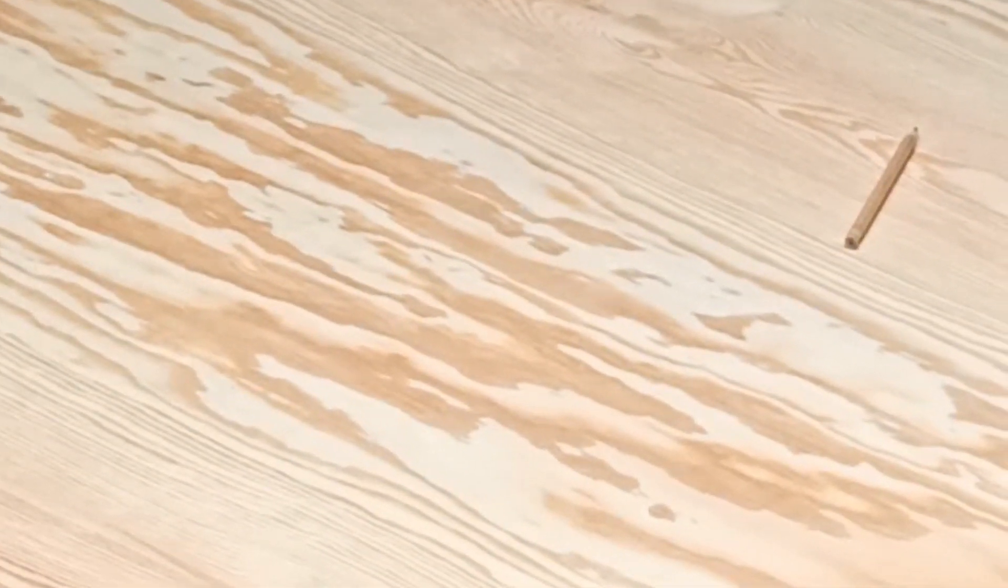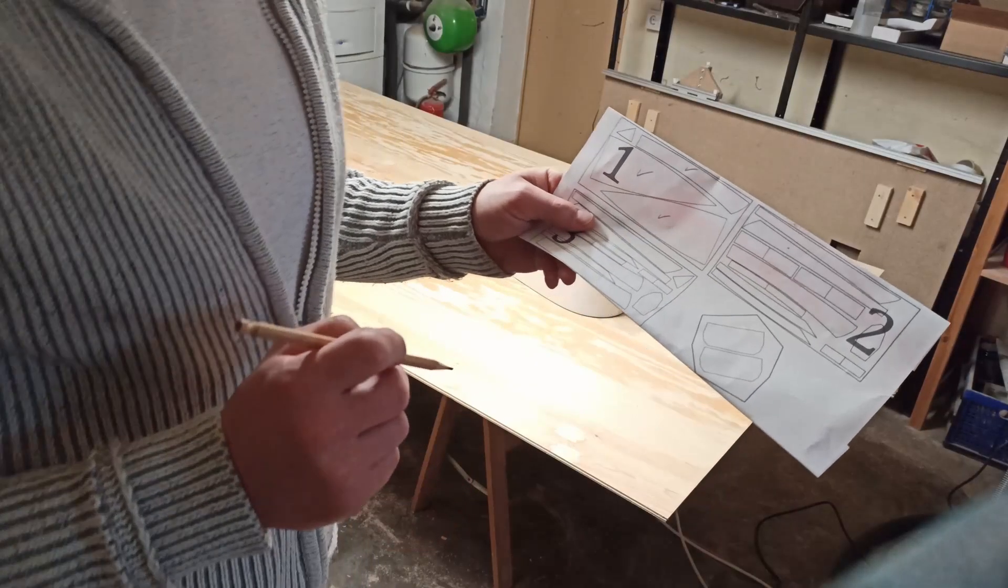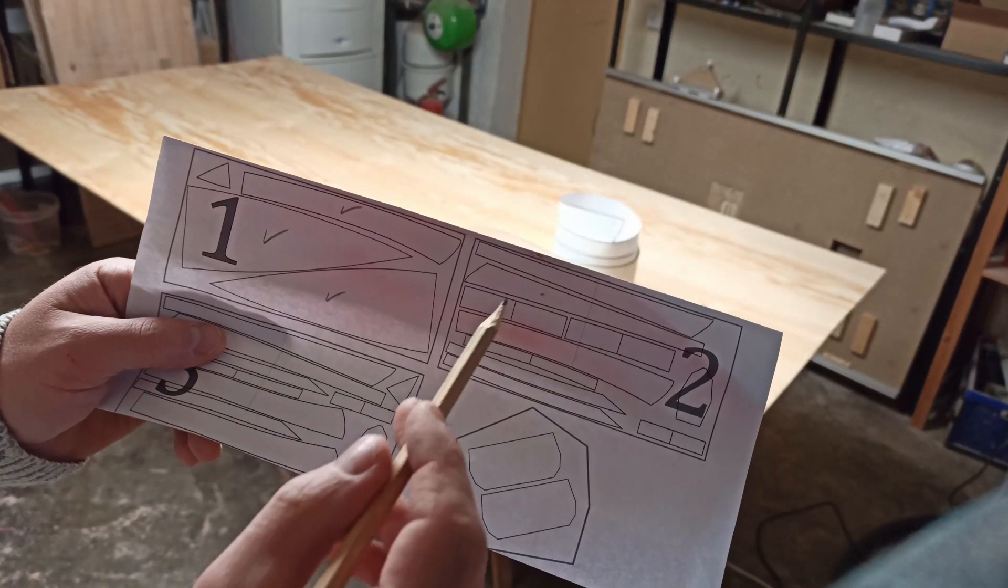This plywood is water boil proof which means that even if water can pass the coating the single layers of wood will not peel off. And here is how I arranged all parts of the boat so they fit to 3 sheets of 125 x 250 cm plywood.